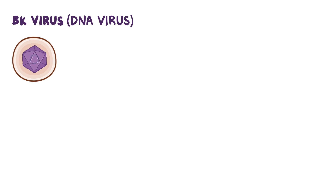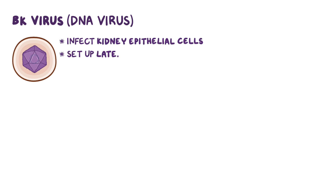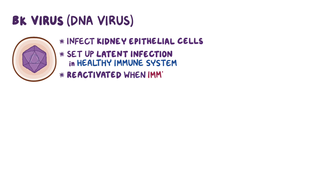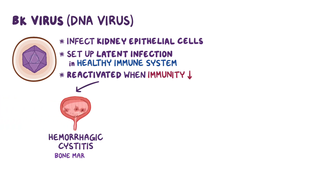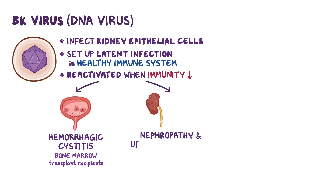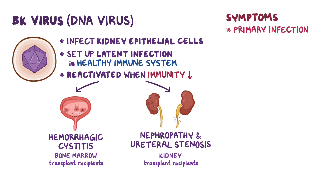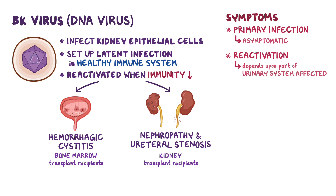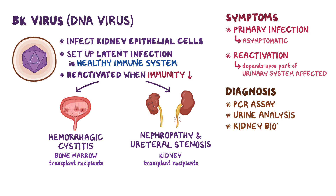As a quick recap: BKV is a DNA virus that infects the kidney epithelial cells and sets up latent infection in individuals with healthy immune systems. It gets reactivated when the immunity lowers, causing hemorrhagic cystitis in bone marrow transplant recipients, and nephropathy and ureteral stenosis in kidney transplant recipients. Primary infection with BKV is usually asymptomatic, and symptoms during reactivation depend on which part of the urinary system is affected. Diagnosis involves PCR assay, urine analysis, and kidney biopsy. Treatment is aimed at reducing the immunosuppression.